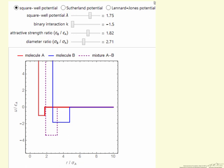This last slider for the square well potential allows us to change the width of the square well. The other two potentials—Sutherland and Lennard-Jones—we'll look at when we go to the interactive simulation.